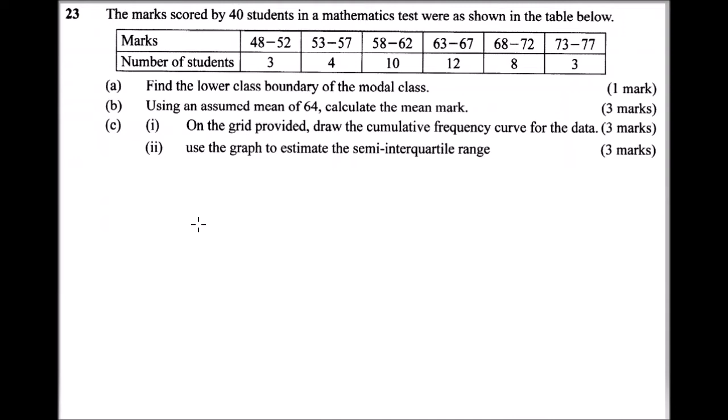So part A, find the lower class boundary of the modal class. So the modal class is that class that has the highest frequency. The frequency here is the number of students. So this is the class that has the highest frequency. And the class boundary is, we subtract 0.5 from 63. So you can say class boundary is equal to 62.5. That is the class boundary of modal class.